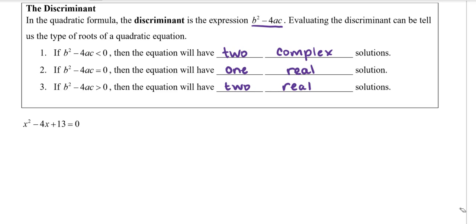So let's take a look at the equation we're given. Let's see if we can use the discriminant to determine the number and type of solutions, and then we'll use the quadratic formula to solve the equations and see if that agrees with our discriminant. So we have x squared minus 4x plus 13 equals 0. So it's in standard form.